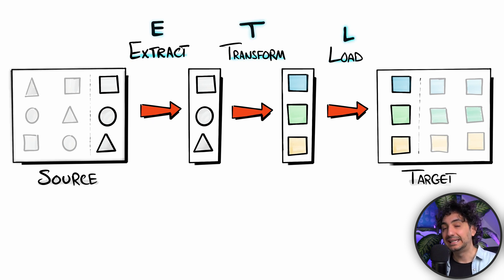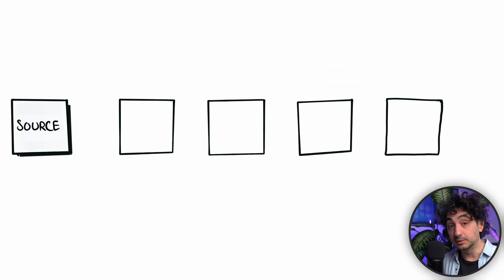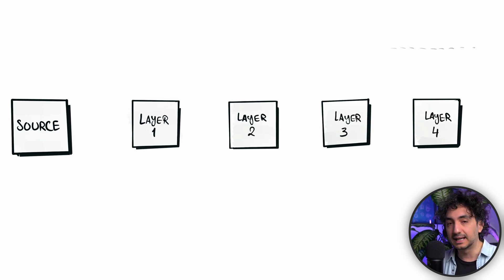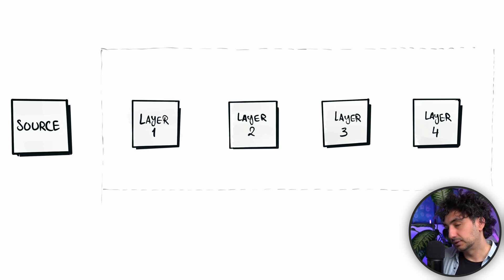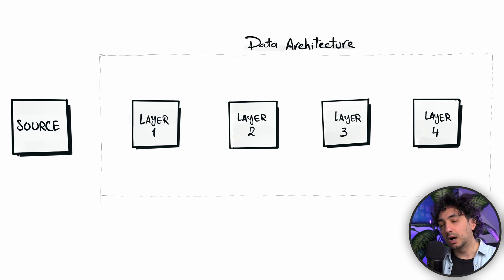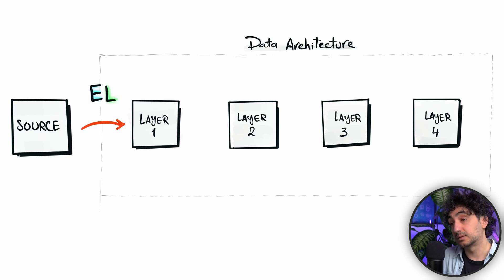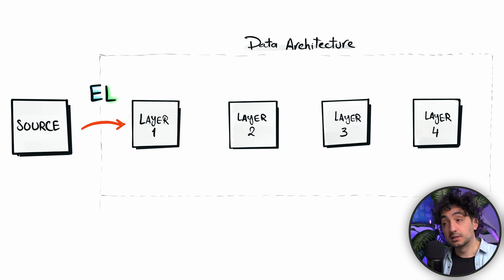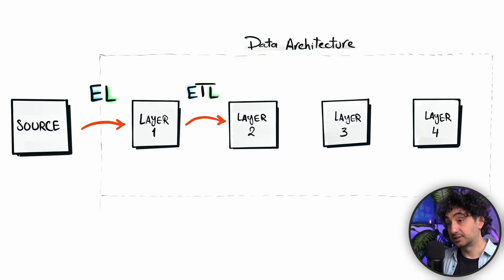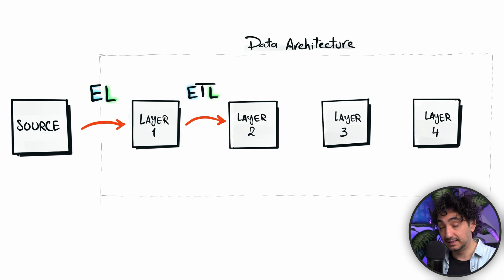In real projects, we don't have just one source and one target. Our data architecture will have multiple layers depending on your design, whether you're building a data lake or a data warehouse. There are different ways to load data between those layers. For example, from source to layer one you might only extract and load directly without any transformations, because you want to see the data as it is. Between layer one and layer two you might use the full ETL.